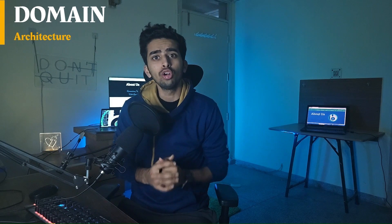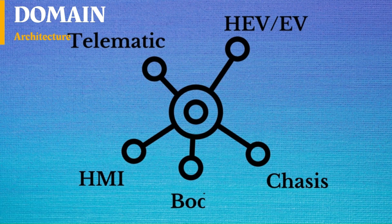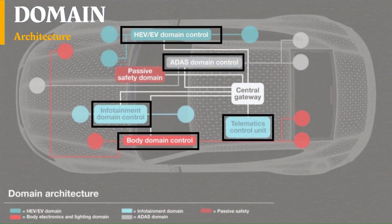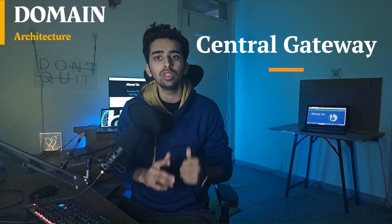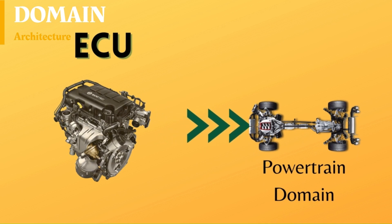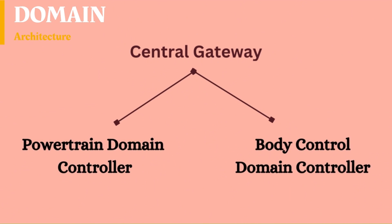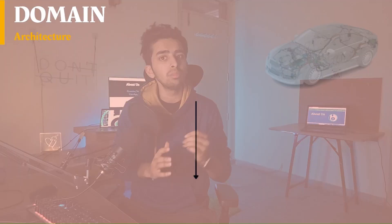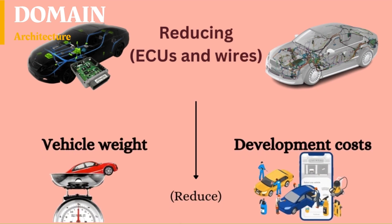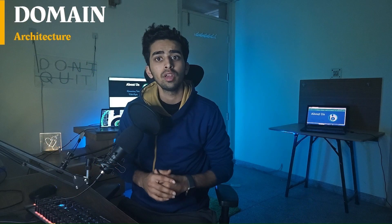Current E/E architecture primarily employs a domain architecture, which brings together ECUs that perform similar processing. The automotive vehicle is divided into five domains: HV/EV domain (also termed powertrain), chassis domain, body control domain, HMI domain, and telematics domain. In a domain architecture, all domains are connected to a central gateway for communication with each other. For example, ECUs for the engine system are integrated into the powertrain domain, and ECUs for sliding doors and power windows go into the body control domain — both connected to the central gateway, reducing ECU count, wiring, weight, and development costs.